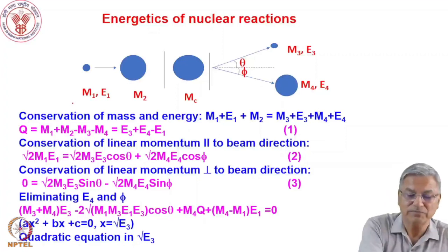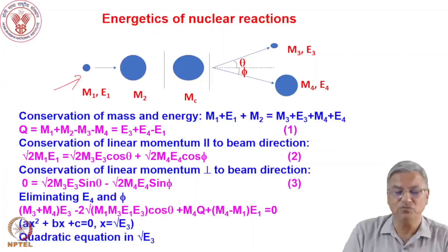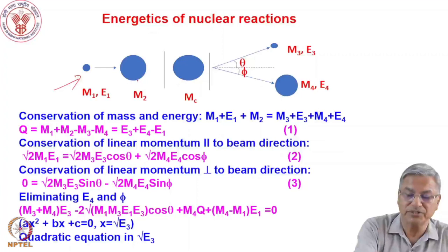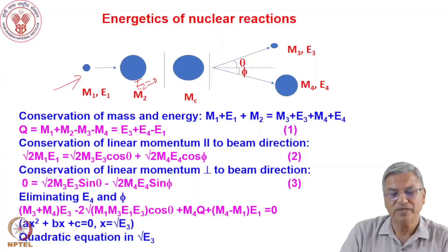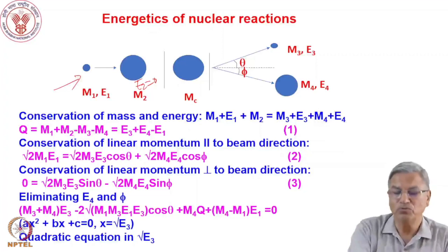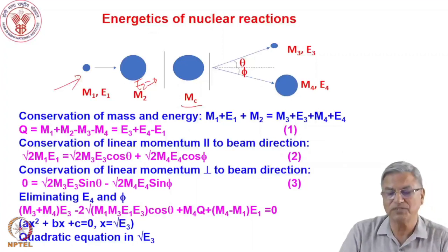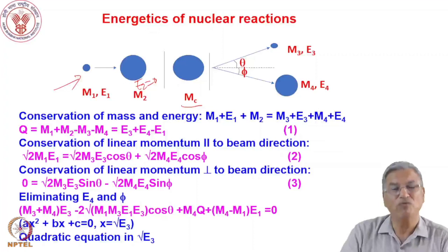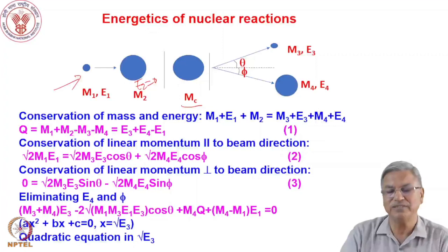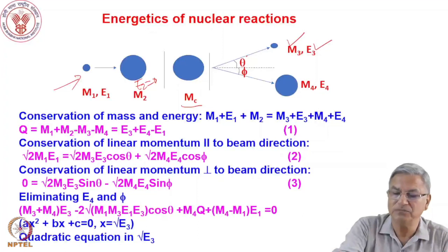We have the projectile of mass M1 and kinetic energy E1 bombarding a target which is at rest, so E2 equals zero. The target is stationary, and it can form a composite nucleus or a compound nucleus — we will discuss the compound nucleus in more detail in subsequent lectures. So MC, the composite M1 plus M2, will form a compound nucleus. After this reaction, you have an ejectile of mass M3 and kinetic energy E3 emitted at angle theta.